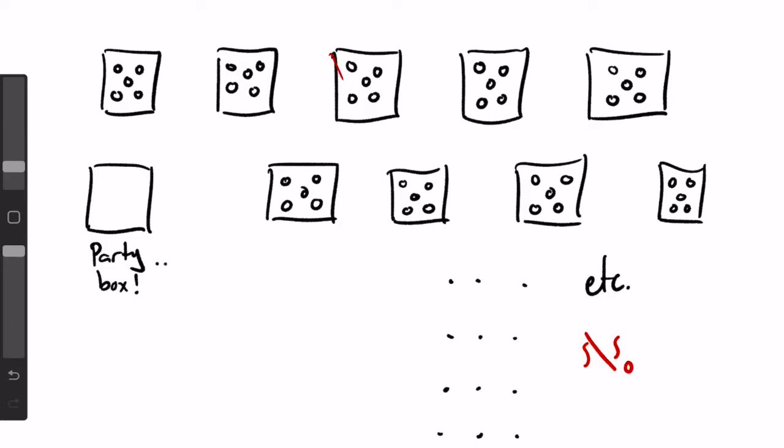We simply use the fact that these boxes are countable, go to the first box, pick a cat from that box, then the second box, and so on.